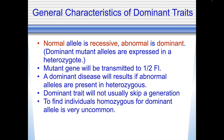General characteristics of dominant traits: the normal allele is recessive and the abnormal is dominant. Dominant mutant alleles are expressed in the heterozygous state. The mutant gene will be transmitted to one half of the F1 generation — you get a 50-50 chance of getting that dominant allele, and if you get it, you have the disorder. Dominant traits do not usually skip a generation, so you'll see them happening in every generation if there are enough offspring.